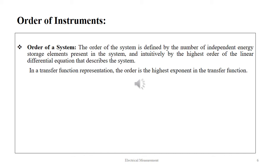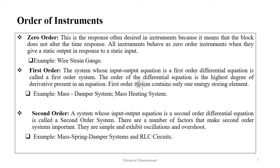The order of a system is defined by the number of independent energy storage elements present in the system, and intuitively by the highest order of the linear differential equation that describes the system. In the transfer function representation, the order is the highest exponent in the transfer function. There are three types of orders of instrument: zero order, first order and second order. The zero order system is the response often desired in instruments because it means that the block does not alter the time response. All instruments behave as zero order instruments when they give a static output in response to a static input.